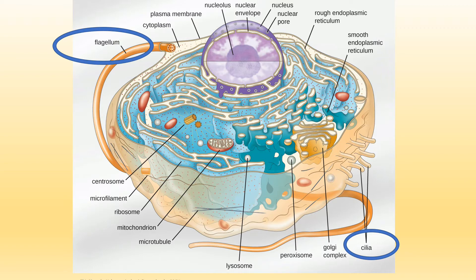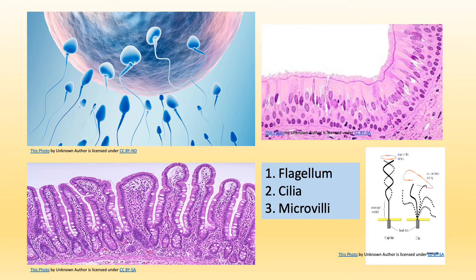This picture is good to point out the flagellum — it's like a tail — and the cilia, which are small, abundant plasma membrane extensions. There may be three different projections coming out from the cell membrane: flagellum, cilia, and microvilli. Cilia and flagellum are made up of microtubules and covered by an extension of the plasma membrane. However, microvilli are pure plasma membrane extensions.